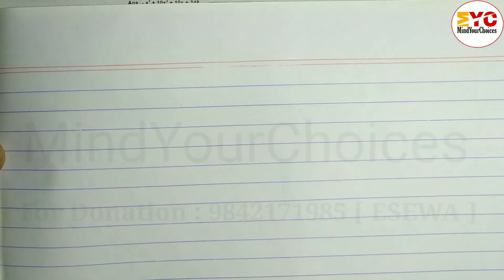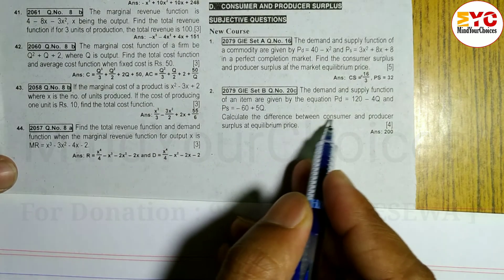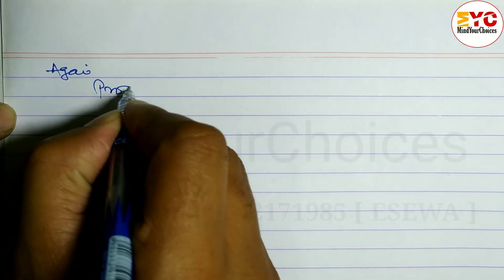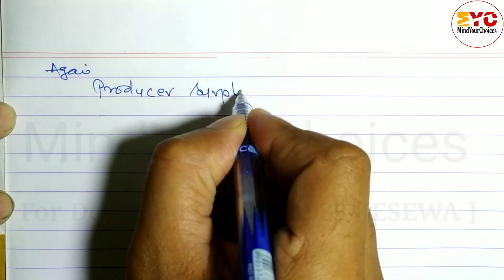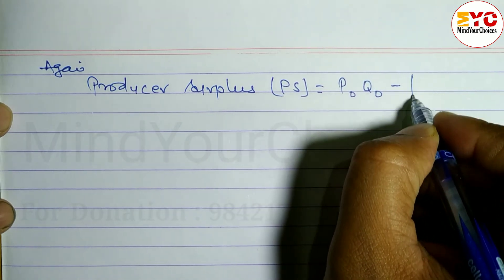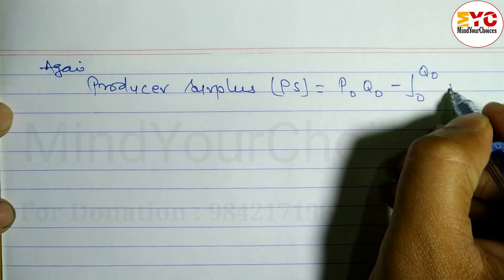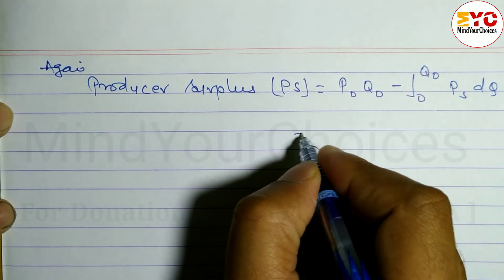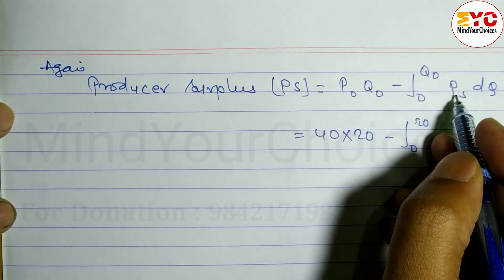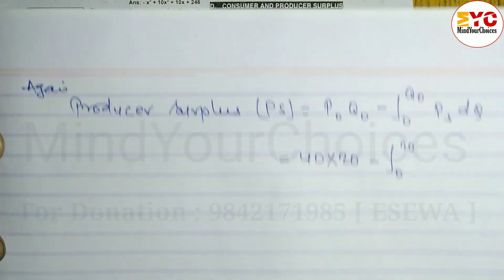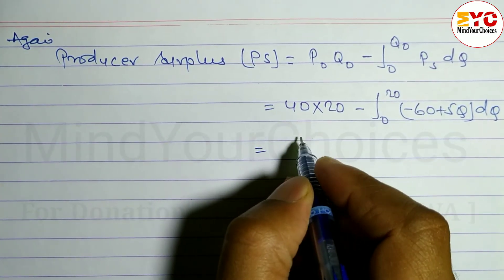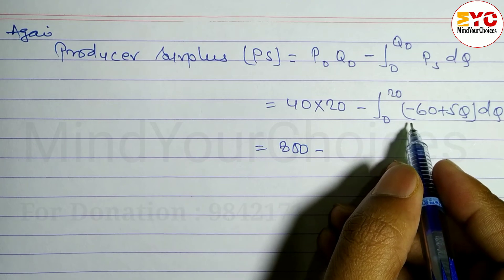Now we have to find the producer surplus and then the difference between consumer and producer surplus. Producer surplus, denoted by PS, formula is: P₀ × Q₀ minus the integral from 0 to Q₀ of the supply function PS dQ. So PS = 40 × 20 minus integral from 0 to 20 of (-60 + 5Q) dQ. That is 800 minus the integration of (-60 + 5Q).